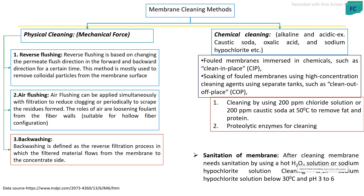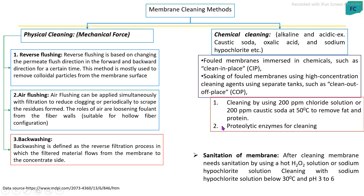Membrane cleaning has two main types: physical cleaning and chemical cleaning, or a combination of both may be used. In physical cleaning, mechanical forces are applied to remove fouling materials from the membrane surface, including reverse flushing, air flushing, and back washing. In chemical cleaning, when fouling is severe, chemical treatment is carried out using acid, alkaline, and sodium hypochlorite solutions. A CIP (clean-in-place) system or clean-out-of-place system may be used. Membrane cleaning can also be carried out using enzymatic treatments.